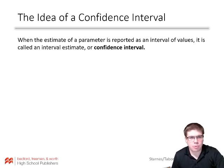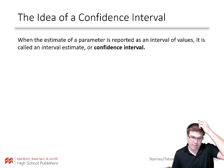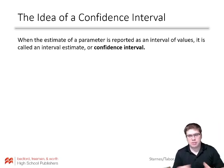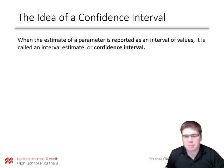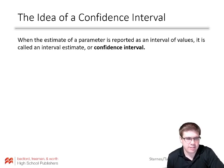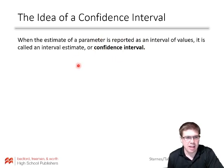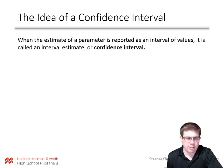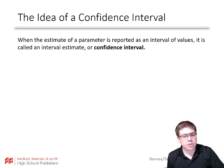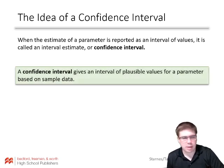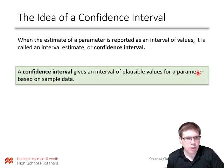When the estimate of a parameter is reported as an interval of values, it is called an interval estimate or confidence interval. By giving an interval, if we do a point estimate it might be right, it might be off — we can't really be sure. But if we give an interval estimate, we can actually have some level of confidence. With a point estimate, we have little to no certainty that it's actually right. That x-bar or p-hat might be higher or lower — it's probably not exactly right. A confidence interval gives an interval of plausible values for a parameter based on sample data.